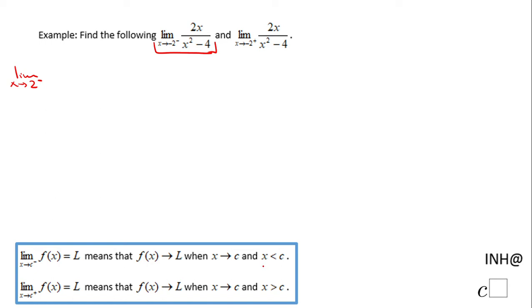The function is 2x over x squared minus 4. If you replace x with 2, we get 2 times 2, which is 4, and 2 squared minus 4 is 4 minus 4, which is 0. It's an undefined form, so how am I going to find this limit? I'm going to get closer to 2.